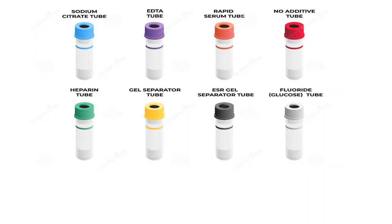This picture shows the different vacutainers which are used for blood collection in the clinical laboratory. The first, light blue color tube, is called the sodium citrate tube; it is used for coagulation studies. The second, lavender color tube, is called the EDTA tube, which is used for CBC as well as for HbA1c estimation.